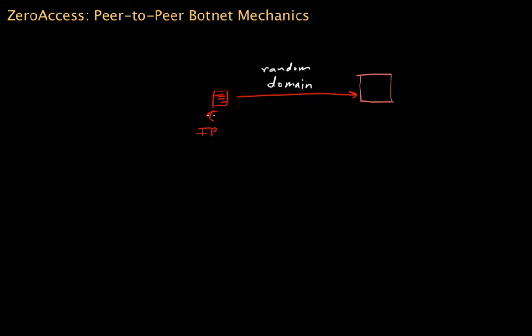This randomly generated domain is not something the server or anyone will ever actually connect to — which is why I don't like calling it a domain. When you look at typical malware botnets, they do create random domains they actually connect to, primarily for resiliency reasons. If they have a long list of domains, they can go down that list in case any of their regularly maintained servers aren't available.